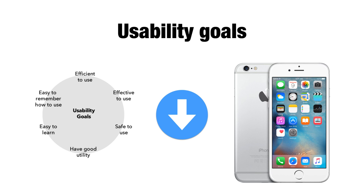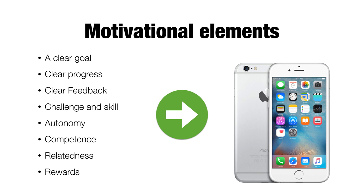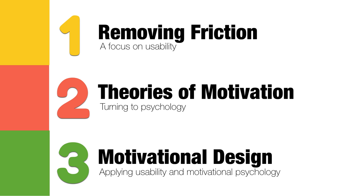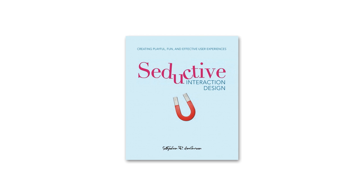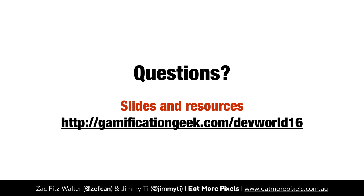So that's basically what I wanted to touch upon today. Look at the usability goals and the motivational elements in your app design, and you may have a better chance of making a more engaging and motivating app. The takeaways: look at the usability goals, look at the theories of motivation and see how you can apply them to app design. If there's one book I can recommend, it's Seductive Interaction Design by Steven Anderson — it's fantastic. All the slides and resources from today's presentation are at gamificationgeek.com/devworld16. Thank you.